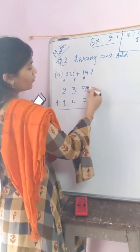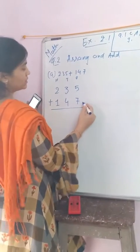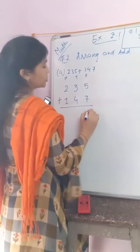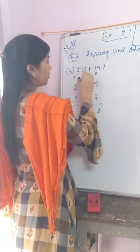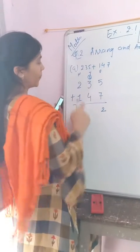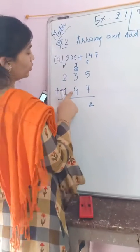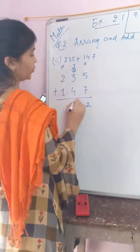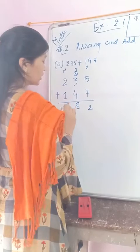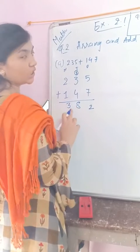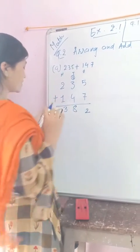Starting from the ones place: 5 plus 7 equals 12, write 2 and carry 1. Then 3 plus 4 equals 7, plus the carry 1 equals 8. Then 2 plus 1 equals 3. The answer is 382.